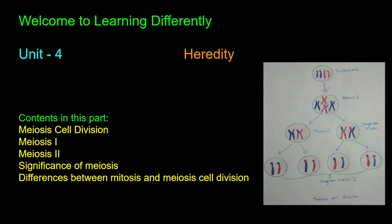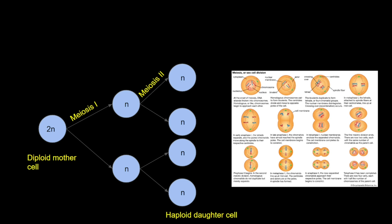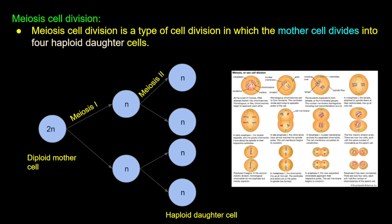First we are going to talk about cell division. Meiosis cell division is a type of cell division in which the mother cell divides into four haploid daughter cells.